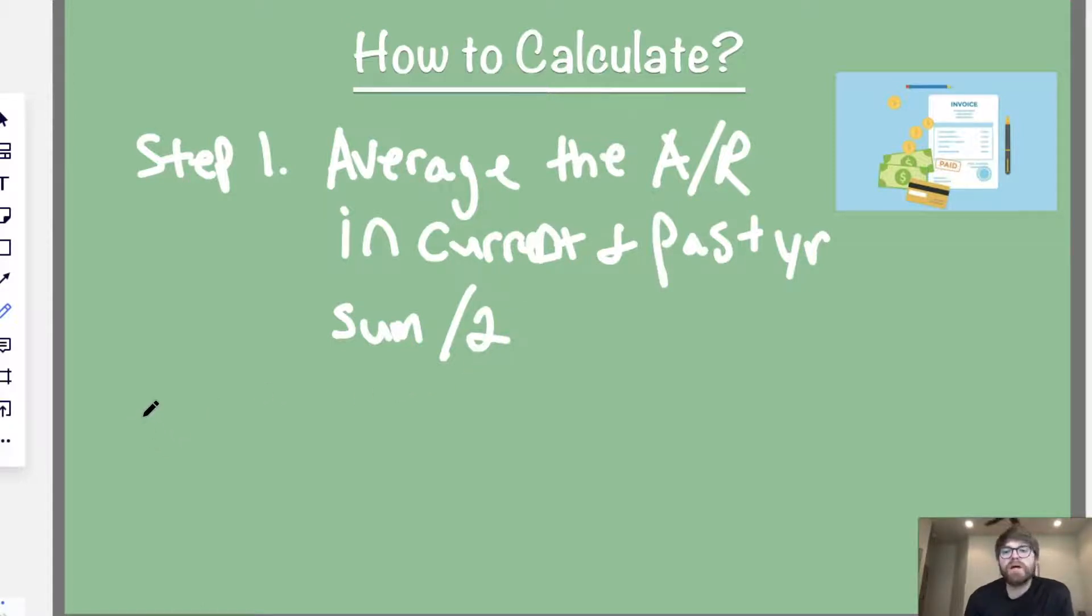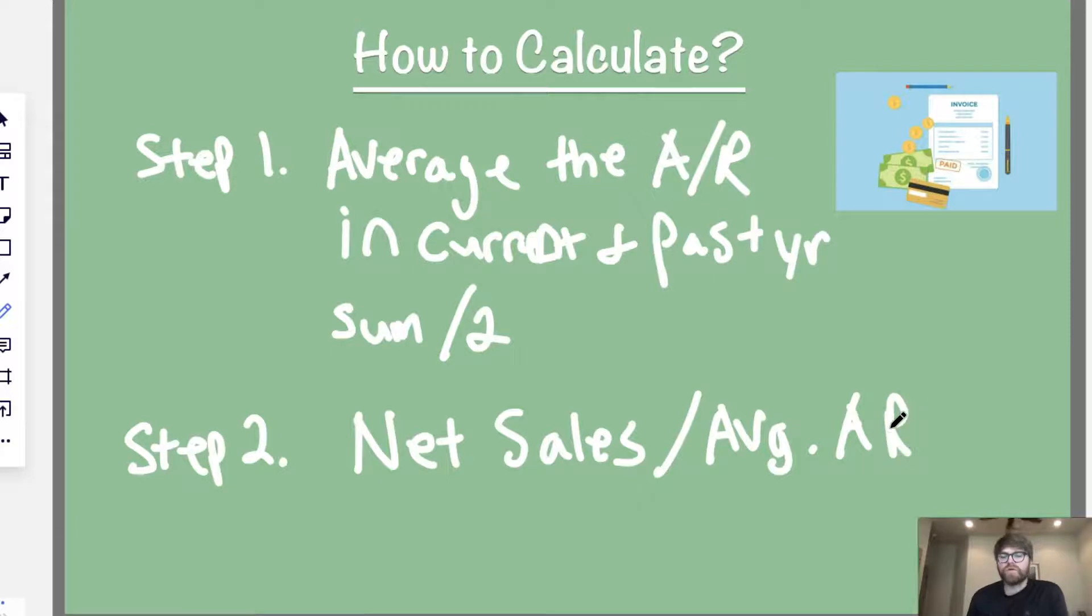And then step two, you're going to plug that into a formula, and it's going to look like this. So, this is step two. You take your net sales, and I'll go over what that is, and you divide it by your average accounts receivable. And I'll just call it A, R for short. Take your net sales, and divide it by average accounts receivable. So, that's the formula. Now, next, in the problem, I'll show you how to calculate net sales and calculate average accounts receivable using numbers. So, let's go ahead and check that out in a sec.